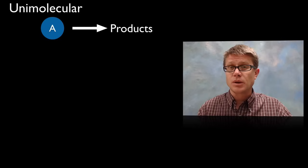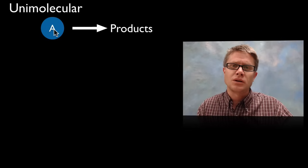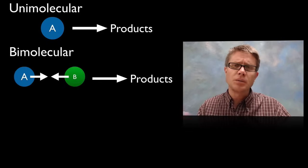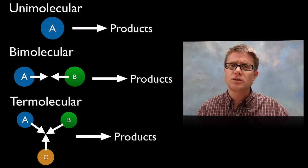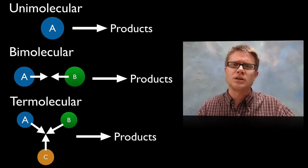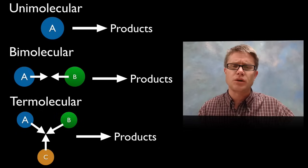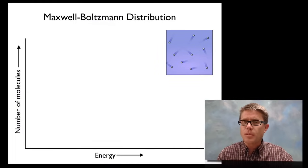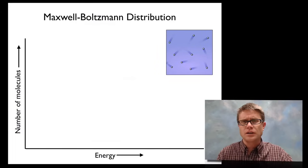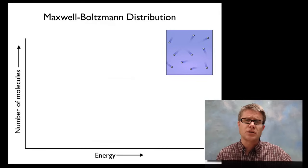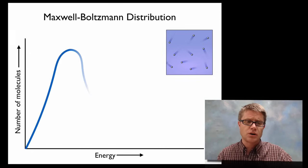And so this could be in a unimolecular reaction when we have just one molecule turning into products. It could be bimolecular where they're running into each other, or it could even be termolecular—we have three things coming together at once. And so all of these are based on the number of collisions that we could possibly have. And so the Maxwell-Boltzmann distribution explains how much energy we have to put into the system for that chemical reaction to actually occur.